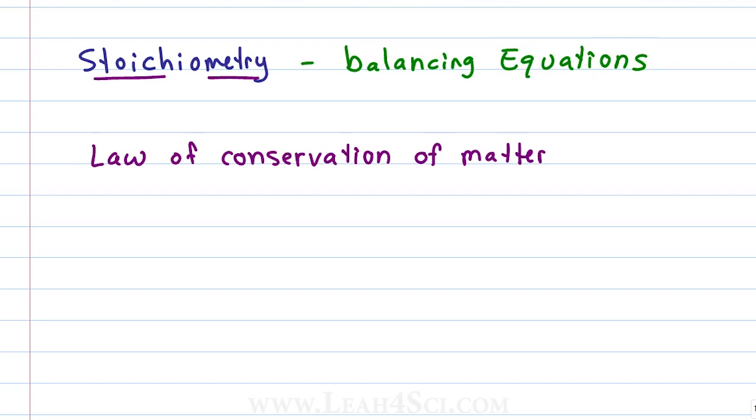Stoichiometry comes from the words stoic meaning elements and metri or meter which is balance. Simply put, stoichiometry is the balancing of equations. The law of conservation of matter tells us that matter cannot be created or destroyed only transferred. This also applies to charge as we'll see in balancing redox where charge can't be created or destroyed only transferred.